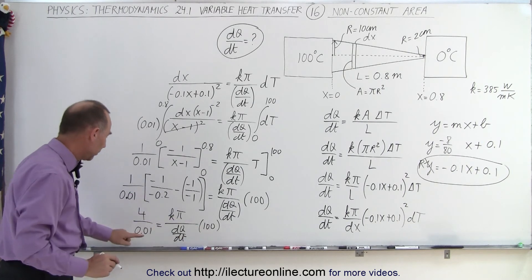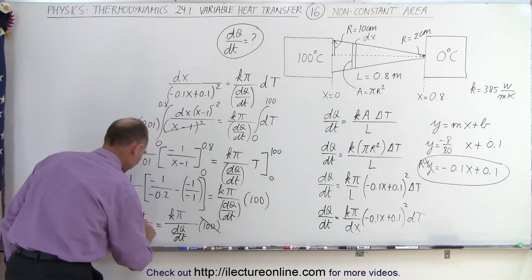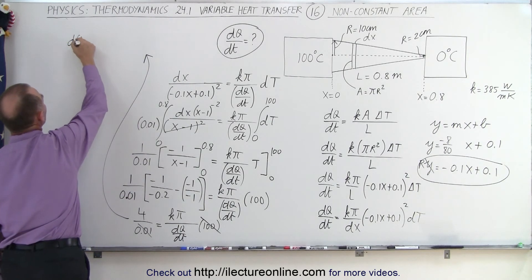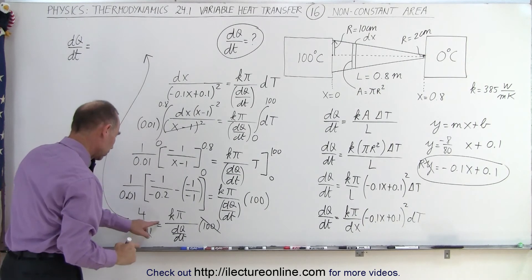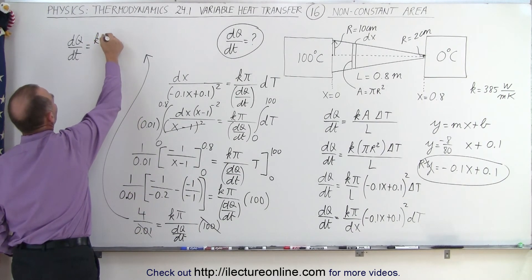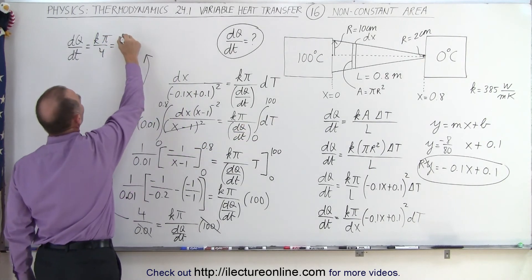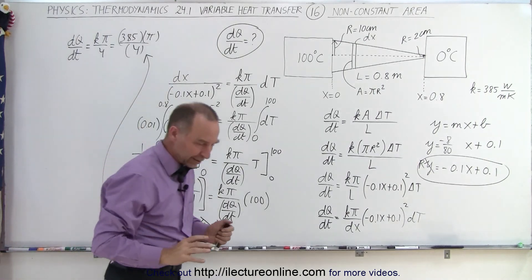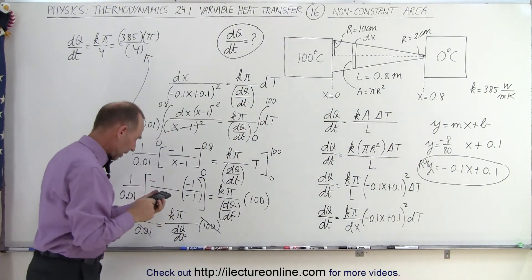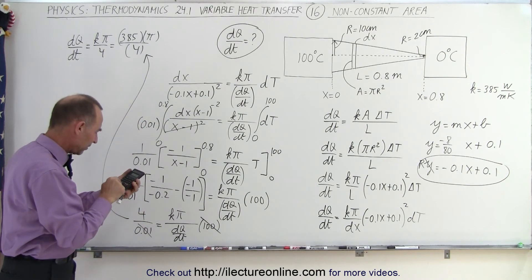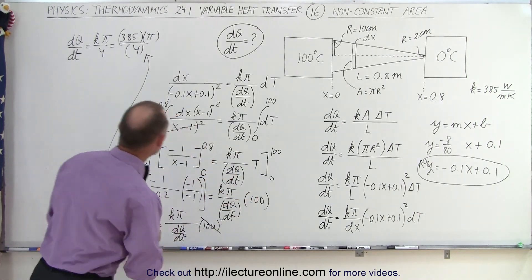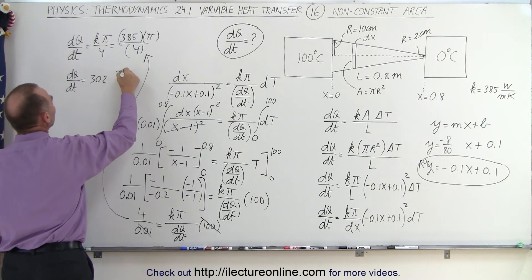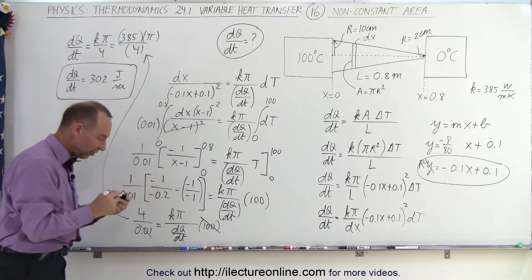Notice that multiplying 0.01 by 100 gives 1, so those cancel. Moving dQ/dt to one side gives dQ/dt equals K·π divided by 4, which equals 385·π divided by 4. Using a calculator: 385 times π divided by 4 gives approximately 302. So the amount of heat per unit time, dQ/dt, equals 302 joules per second.